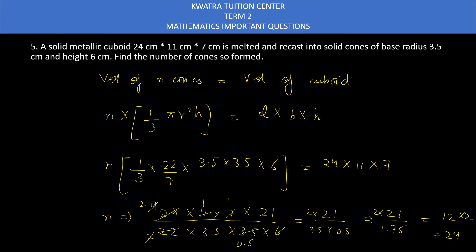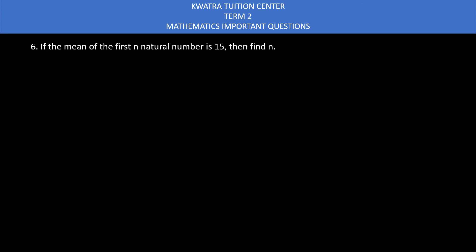Now moving to the last question of Section A, the sixth question. If the mean of the first n natural numbers is 15, then find n. What have you given? The mean is given for first n natural numbers. Natural numbers start from 1, 2, going to n. We divide by total natural numbers n. Which formula should we use? The SN formula, which is n times n plus 1 divided by 2. But mean is there.